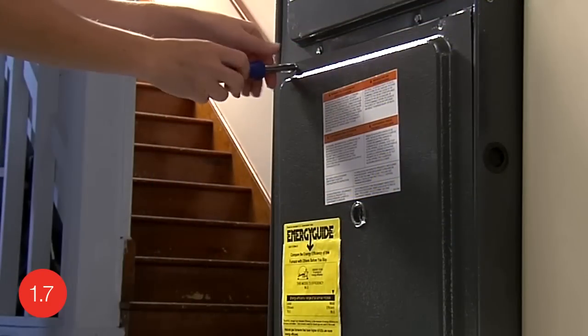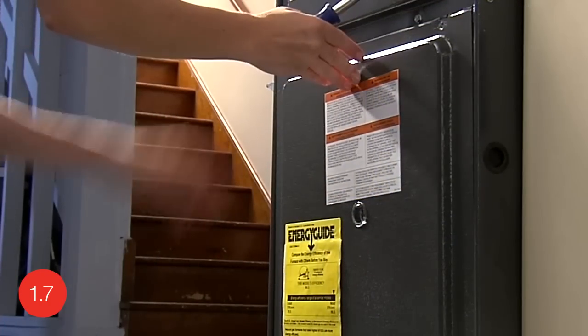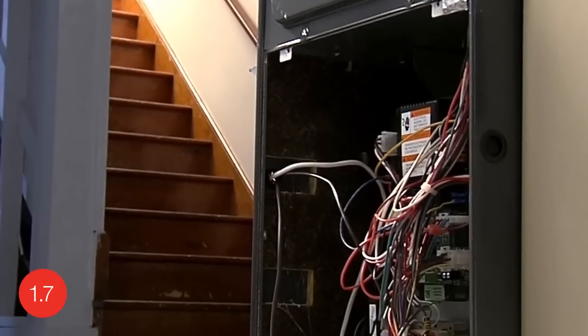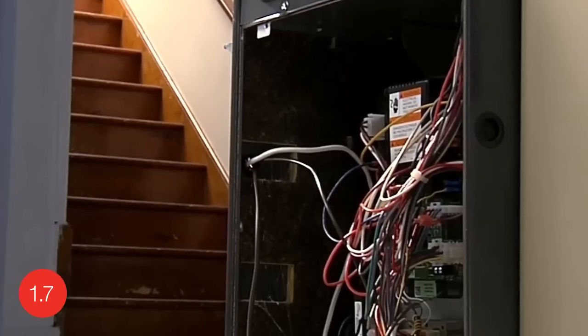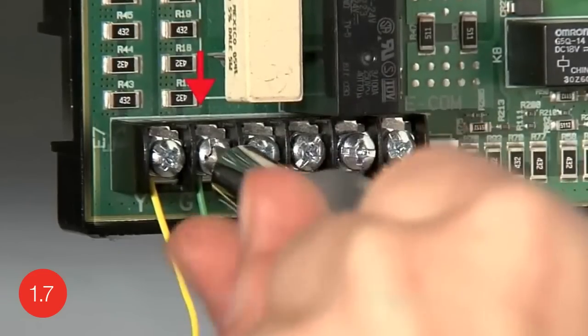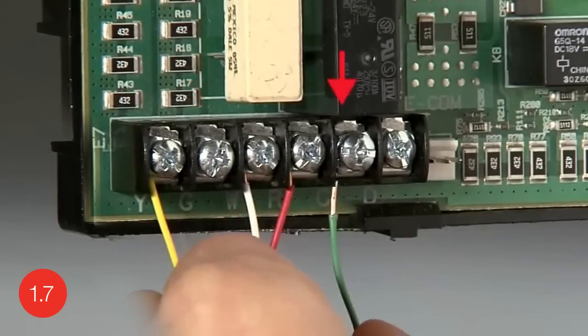The terminal block is located in your heating and cooling system. Not all terminal blocks will look the same, but they should have the same letter designations. Move the G wire to the C terminal at your terminal block.